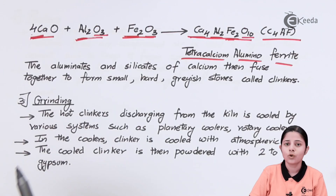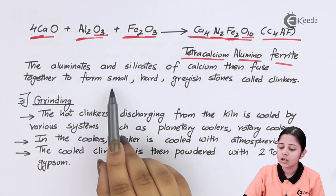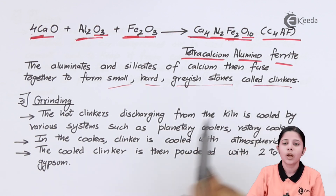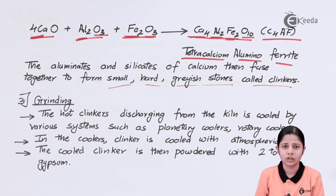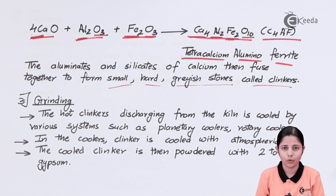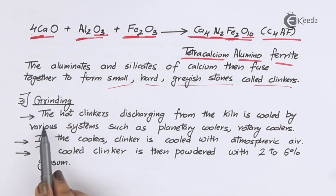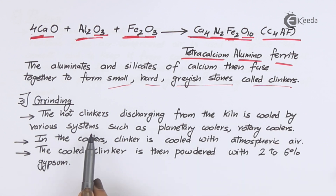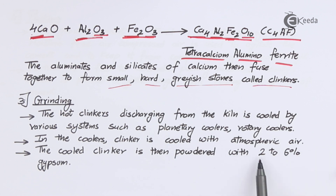The third process is grinding. The output from the burning process is small hard grayish clinker stones, but cement must be a very fine powder. The hot clinkers discharging from the kiln are cooled by systems such as planetary coolers or rotary coolers, using atmospheric air. The cooled clinker is then powdered and mixed with 2 to 6 percent gypsum, which provides good strength to the final cement.